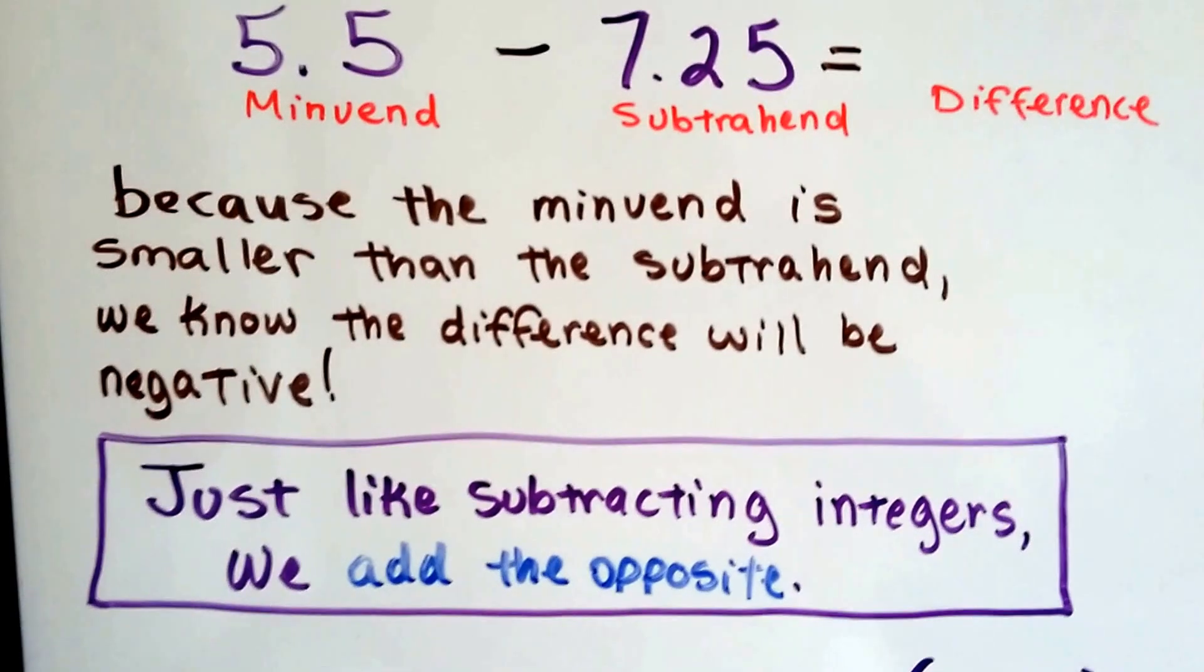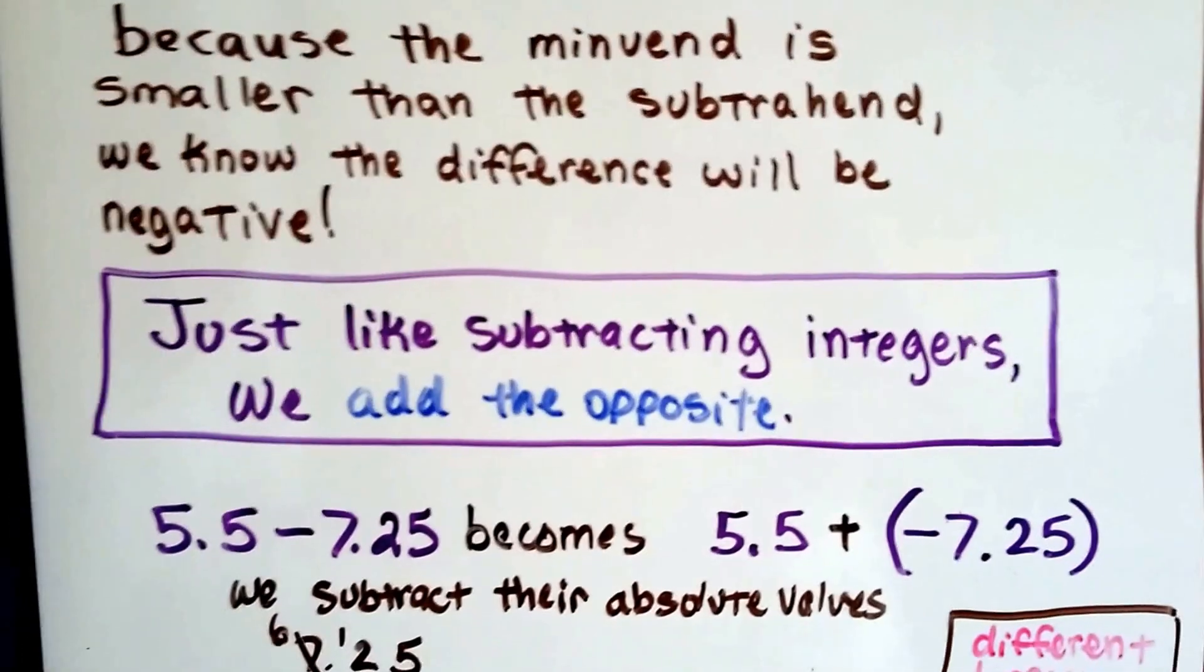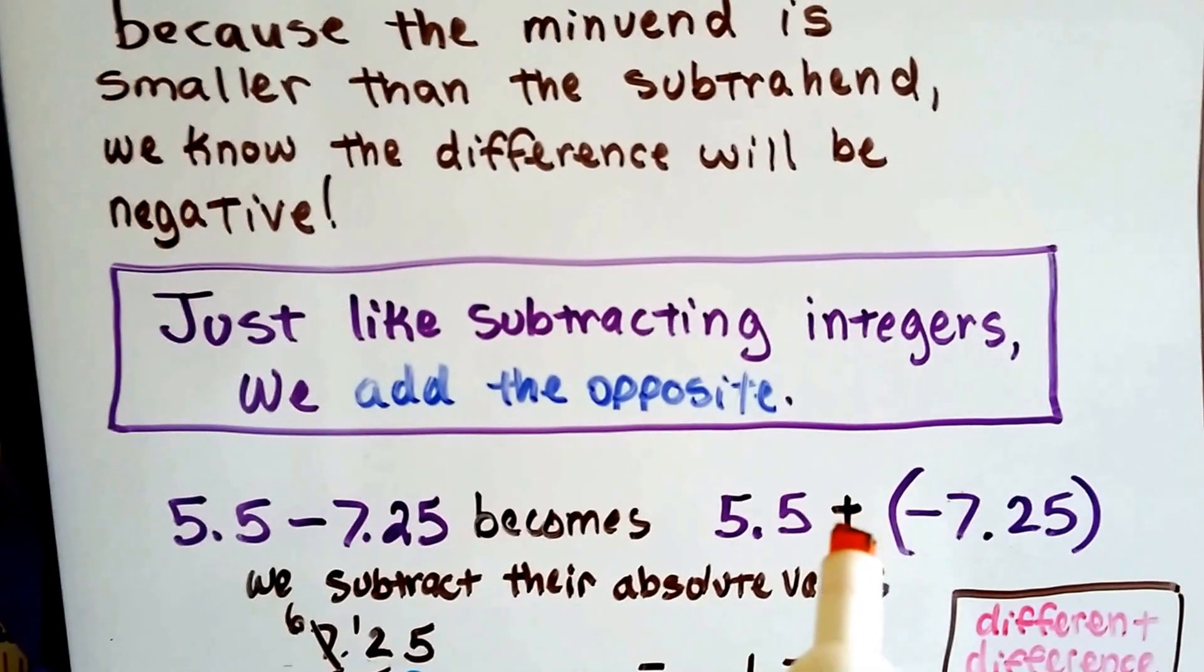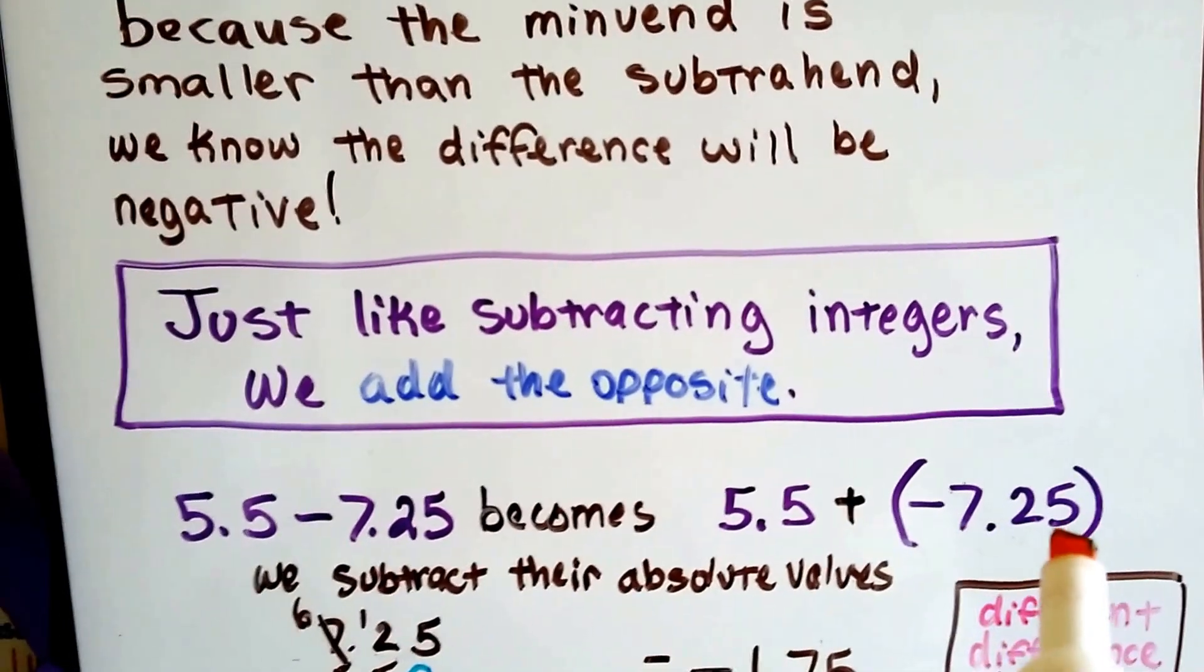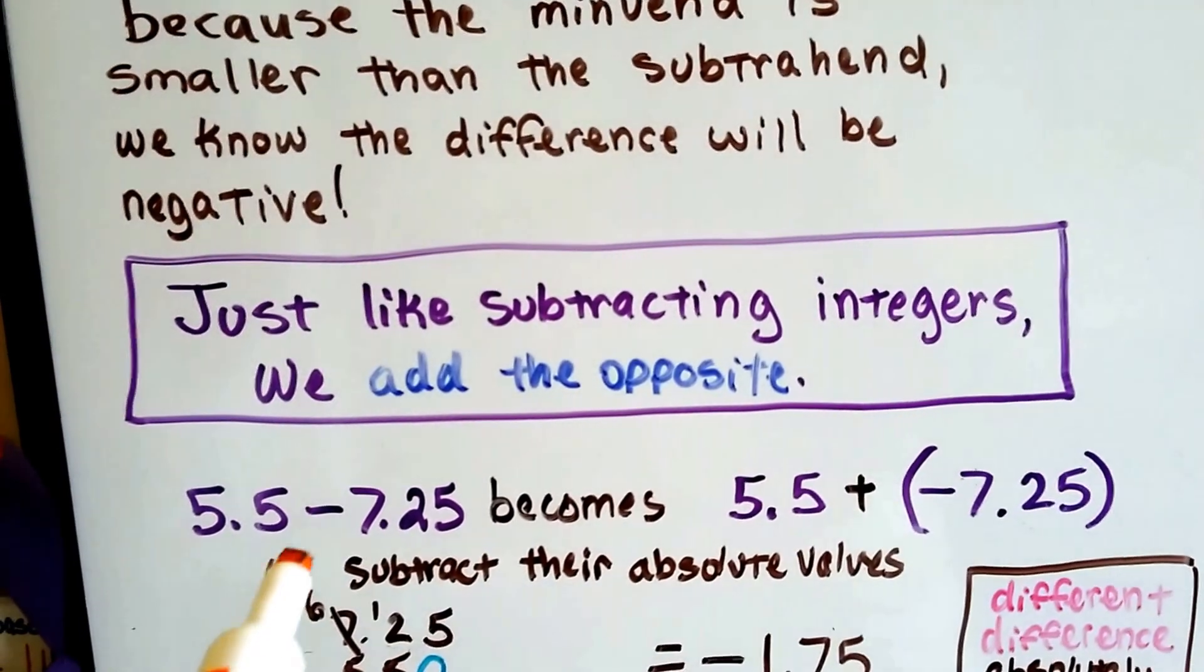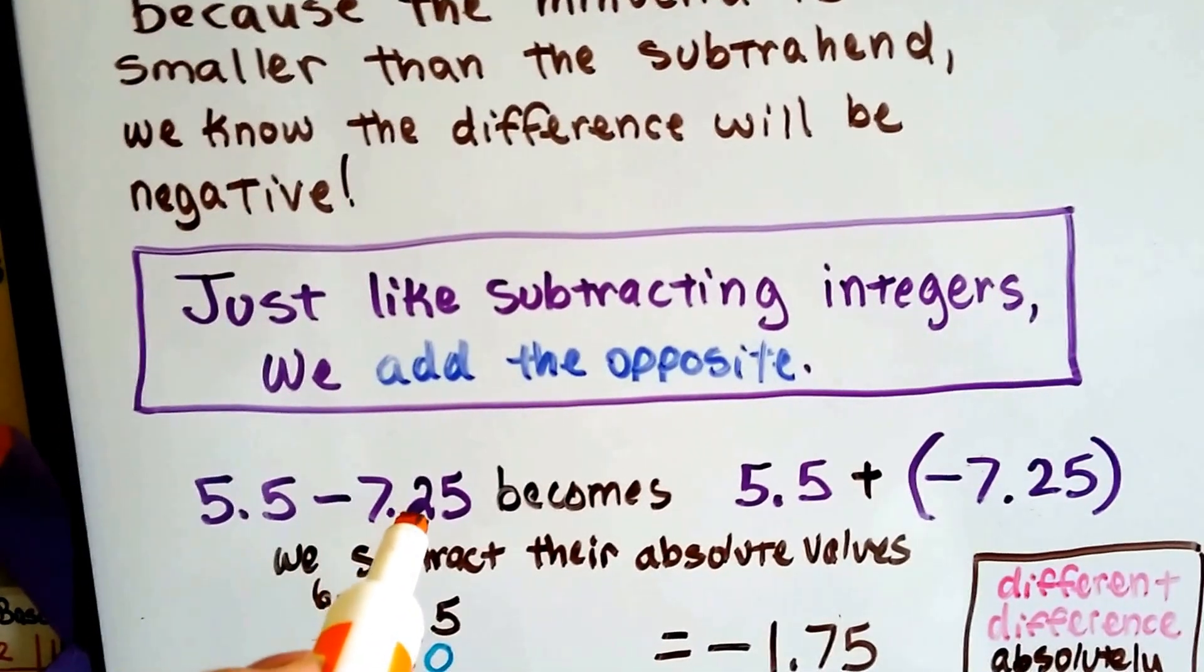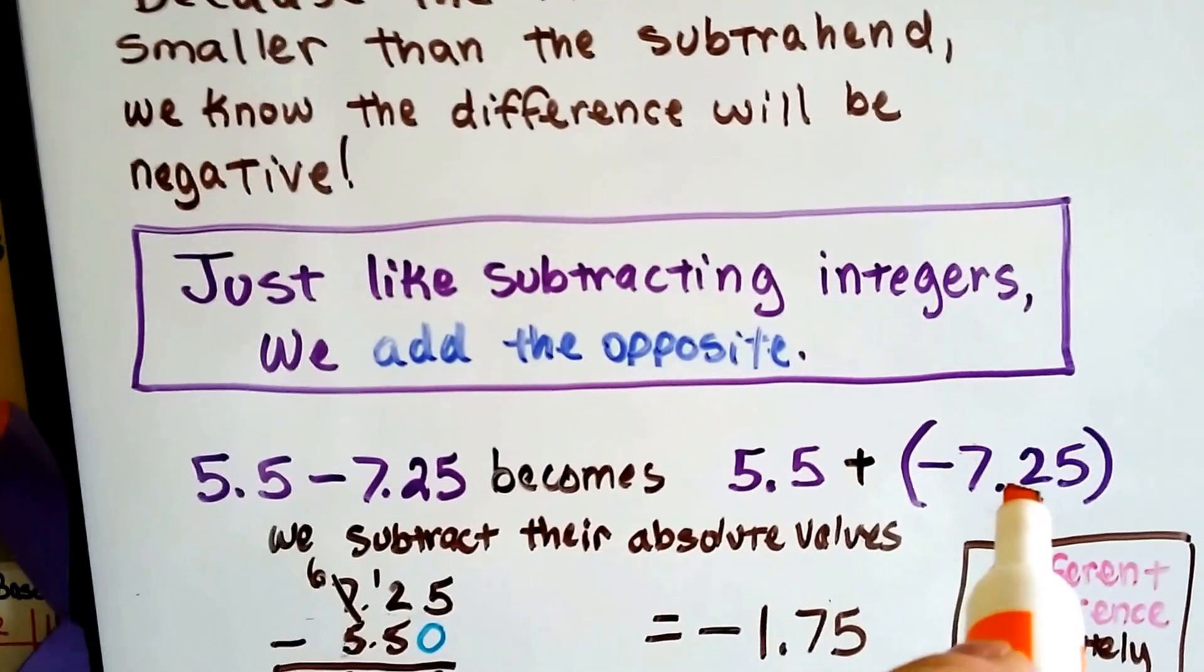Just like subtracting integers, we add the opposite. So 5.5 minus 7.25 is going to become 5.5 plus negative 7.25. We add the opposite, so the negative sign becomes a positive, and this positive 7.25 becomes its opposite, negative 7.25.